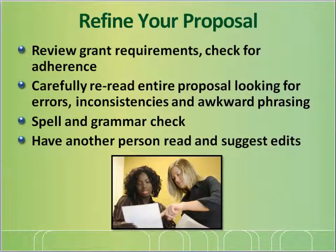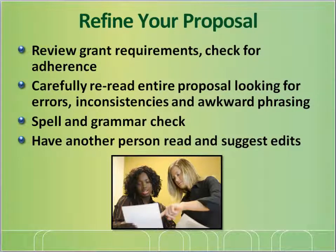When you have completed these six components of your proposal, consider it a first draft. The next step is to refine it. Review your grant proposal requirements again and check to see that you've adhered to them — note the font, line spacings, margins, page length, word length, etc. If there is a scoring rubric for the grant program, review it and check your proposal to see if it fully addresses each scoring rubric item. Re-read your draft proposal several times, taking breaks between readings and looking for awkward sentences, errors, or anything that is unclear. Use the spelling and grammar check that Microsoft Word makes available. Have another person read it and note anything that is unclear, any errors or gaps that they notice.